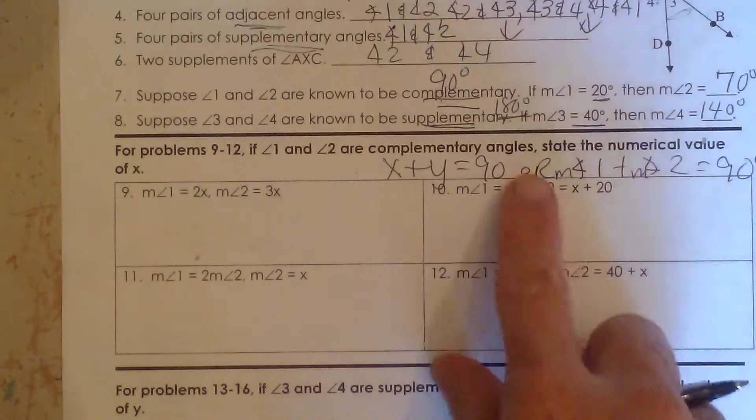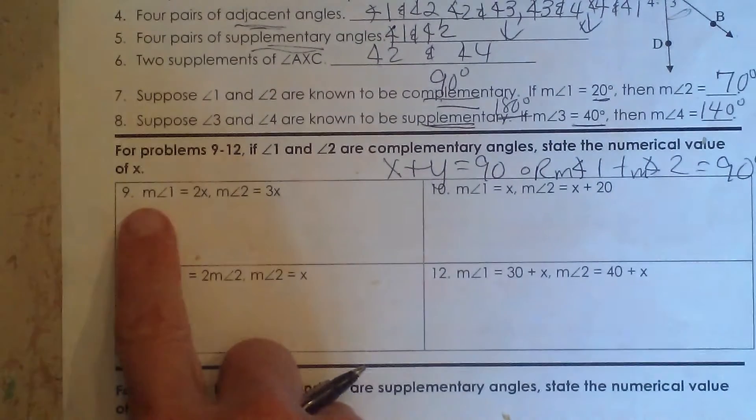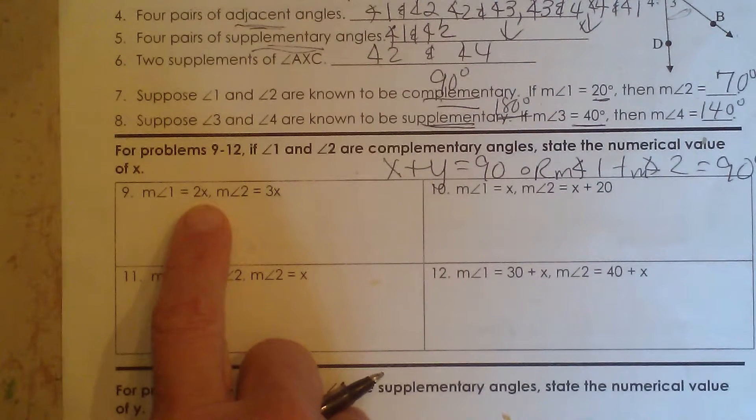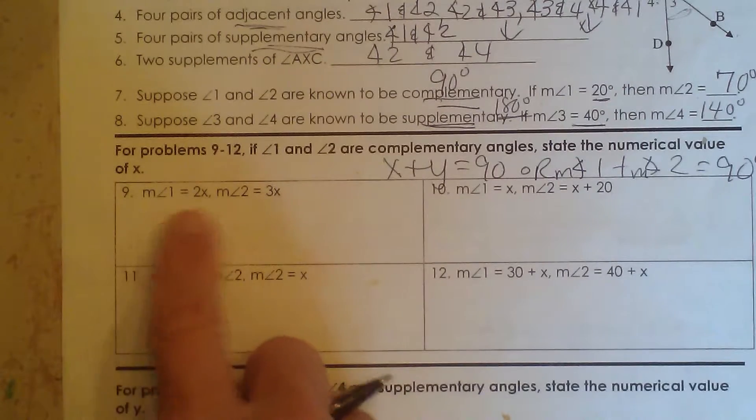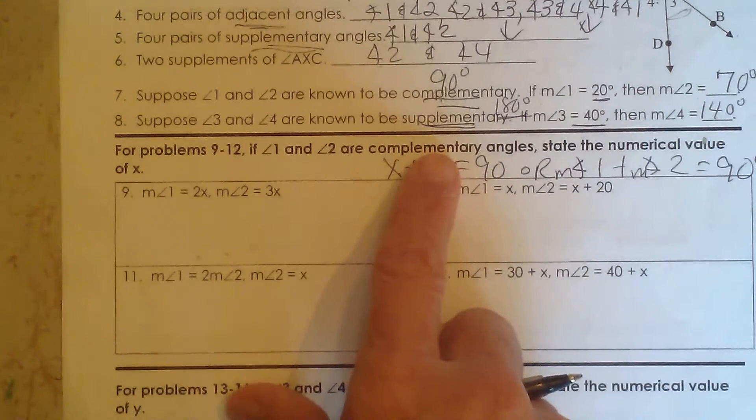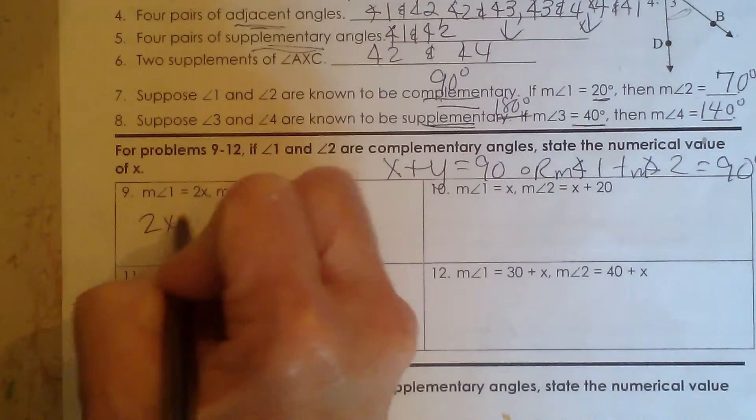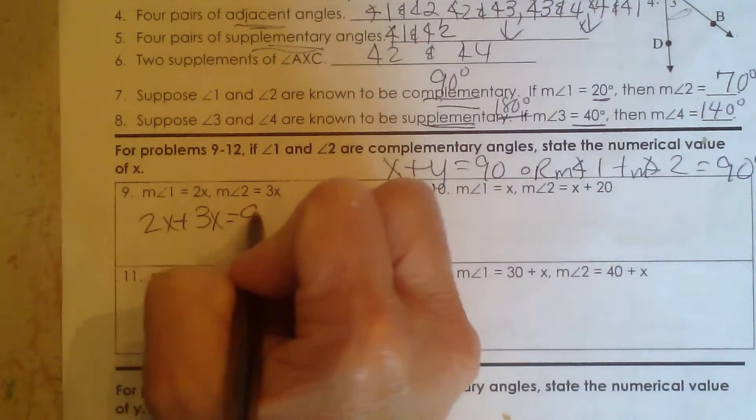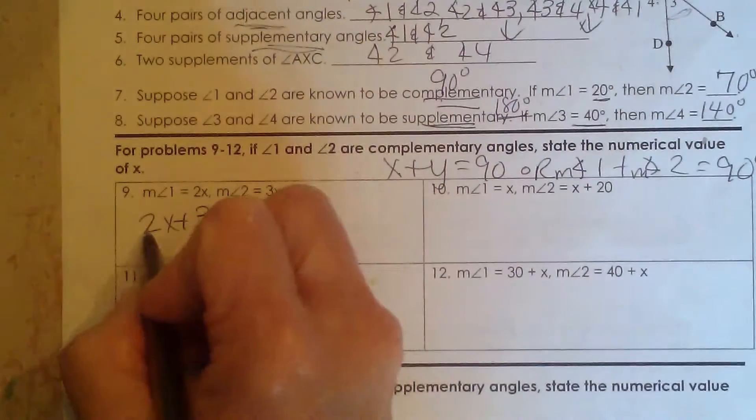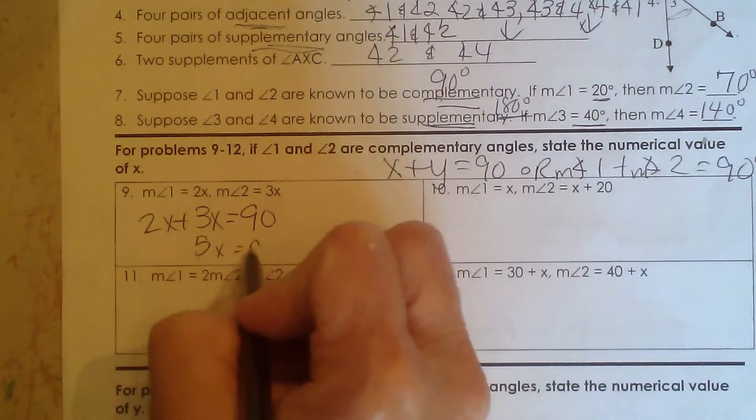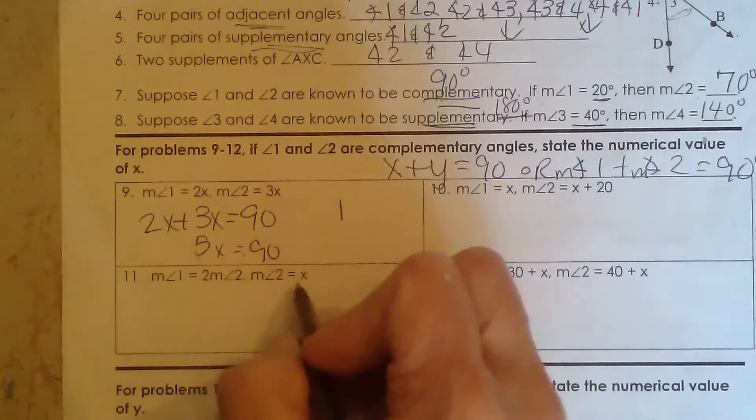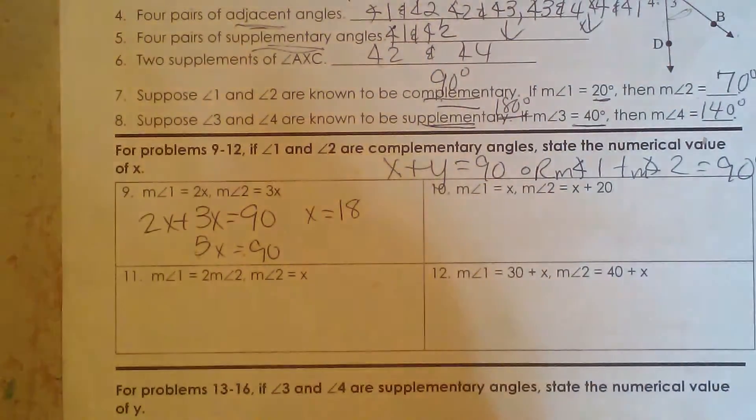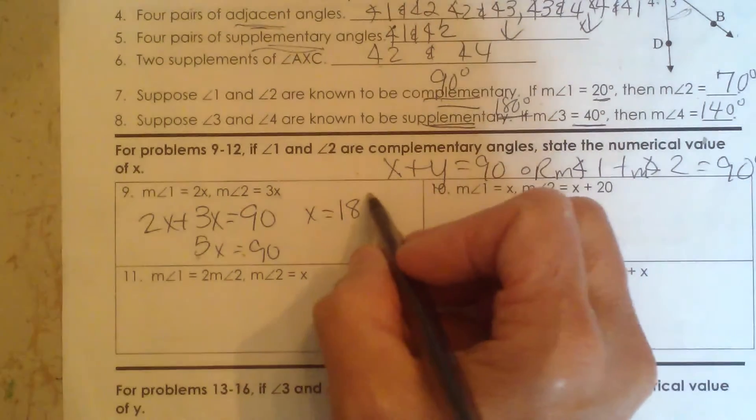So let's look at these relationships. If angle 1 is represented by 2x and angle 2 is represented by 3x, what's the value of x? Well if we're told they're complementary, we're just going to add those two angles up to a sum of 90 degrees. So that's 2x plus 3x, that gives me 5x is equal to 90. And 5 goes into 90, let's see, 18 times. So x is 18.